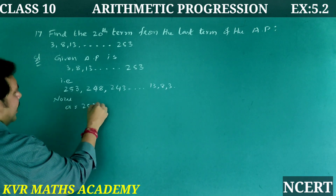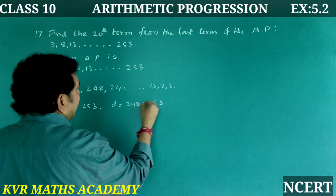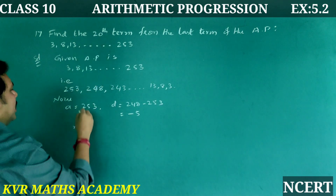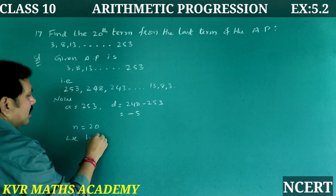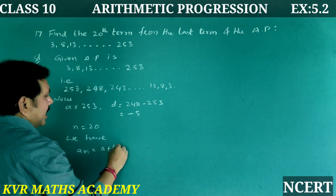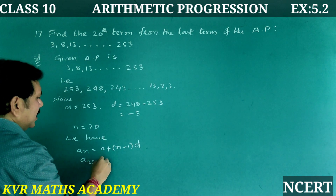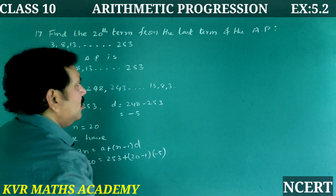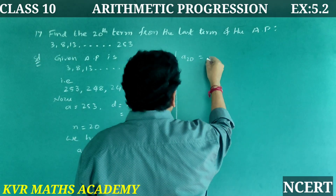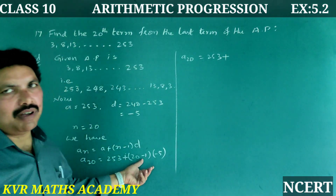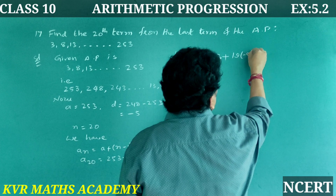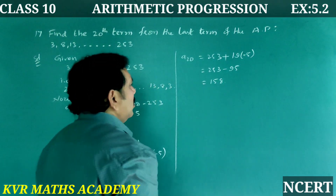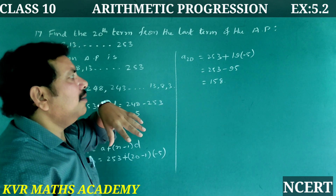In the reversed AP, a = 253 and d = −5. Using a_n = a + (n − 1) × d: a_20 = 253 + (20 − 1) × (−5) = 253 + 19 × (−5) = 253 − 95 = 158. So the 20th term from the last term is 158.